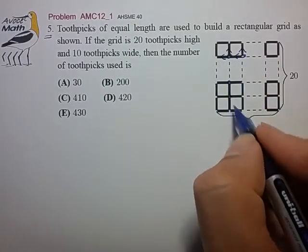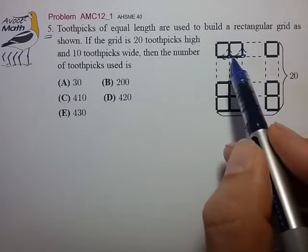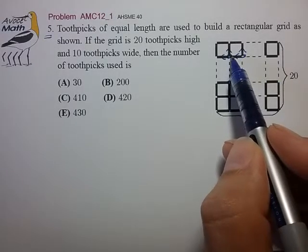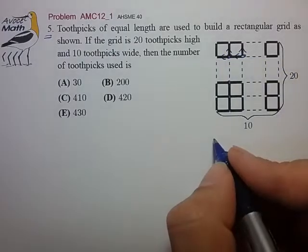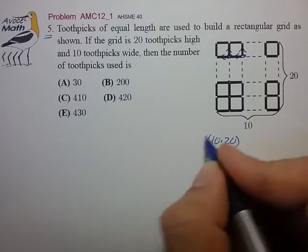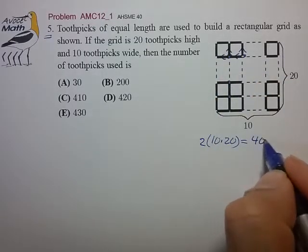So we can basically count up the number of toothpicks by counting the number of these vertices. And we basically have a grid of vertices that is 10 wide by 20 tall, so that's 10 by 20, and two toothpicks for each vertex, so that's a total of 400.